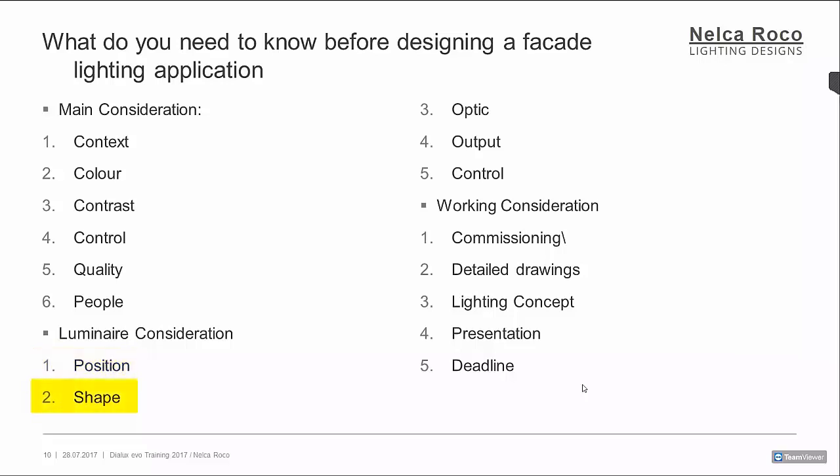Consider the shape — most architects today want light without the luminaire being visible. They want to see lights on the building but not the fitting itself. So make sure the shape or size of your luminaire is small enough to hide it or make it invisible to passersby.